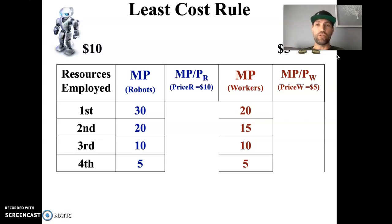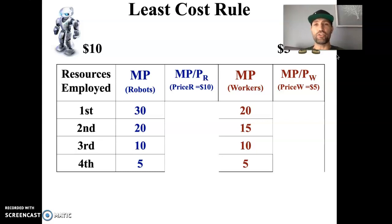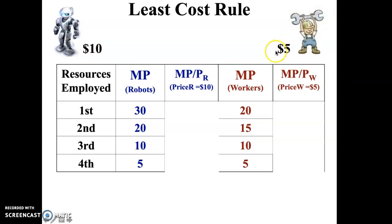This is something we would use if we do not have information on the price of the product that these factors of production are producing. If we do know how much the product sells for, we'll use a different method. So we have the price of the factors of production — a unit of robots is $10, a unit of workers is $5. We can calculate the marginal productivity per dollar for each factor of production by dividing marginal productivity by the factor's price.